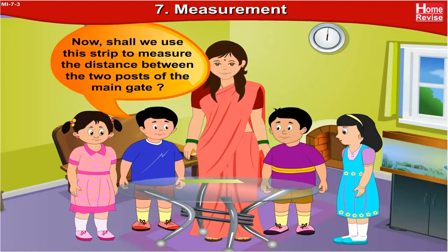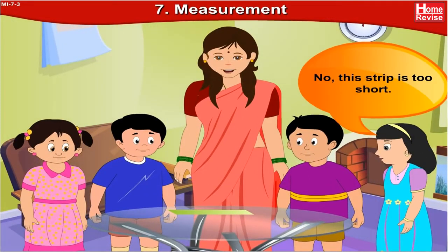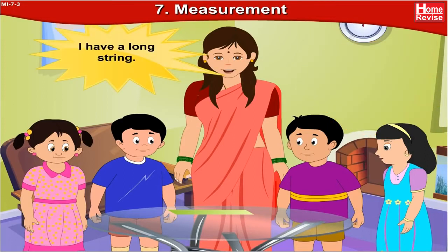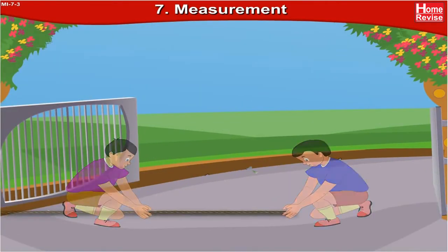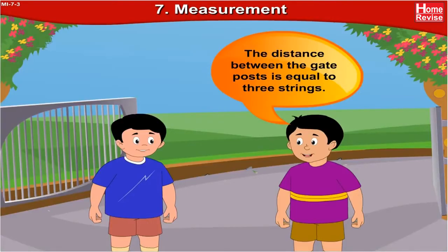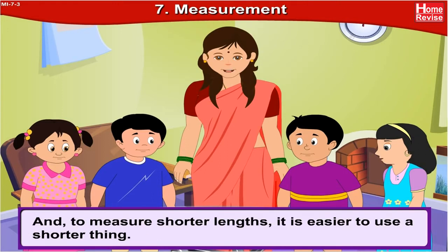Shall we use this strip to measure the distance between the two posts of the main gate? No, this strip is too short. I have a long string — let's use that. Let's use the string to measure the distance between the gate posts. We can see that the distance between the gate posts is equal to 3 strings. It's easier to measure a great distance using something of greater length, and to measure shorter lengths, it is easier to use a shorter thing.